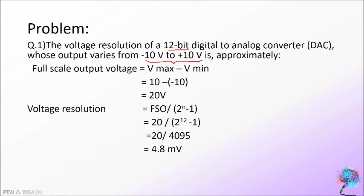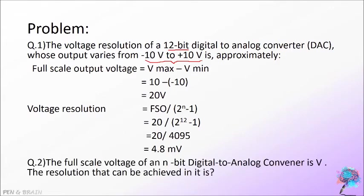Now let's look at a problem from NET 2017. The full scale voltage of an N-bit digital-to-analog converter is V. Find the resolution that can be achieved. This is a direct problem. Using the formula FSO divided by 2 raised to N minus 1, where FSO is given as V, the answer is V divided by 2 raised to N minus 1.